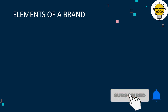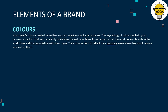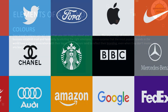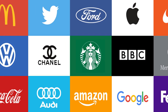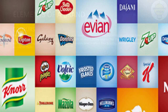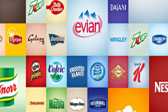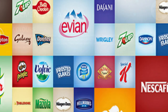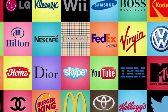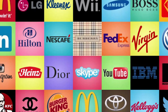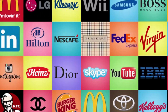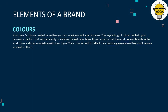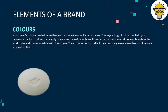The next element is color. The psychology of color can help your business establish trust among customers. The most popular brands in the world have a strong association with their colors. Colors tend to reflect their branding even when there is no text involved. Sometimes a color becomes the symbol of recognition.